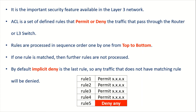If one rule is matched, then further rules are not processed. By default, implicit deny is the last rule for any ACL. So if there is any traffic that does not have a matching rule, it will be denied.